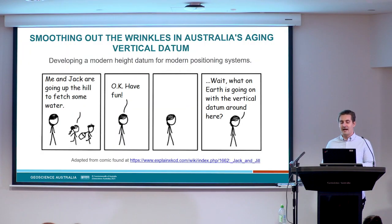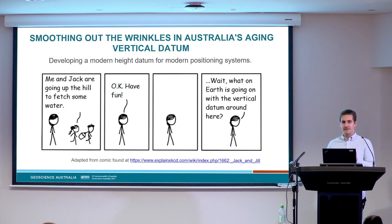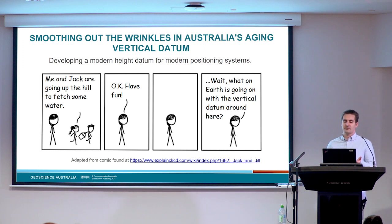An accurate vertical datum is a really important component when you're making a map of heights. And if you get it wrong, it can look like weird things are happening, like water flowing uphill or pooling in unexpected places. So maybe Jack and Jill live somewhere where the vertical datum has a bit of an error.